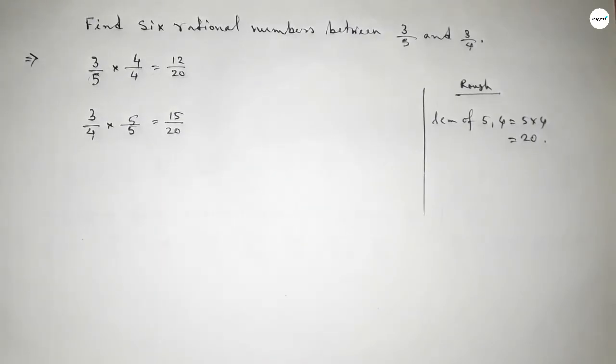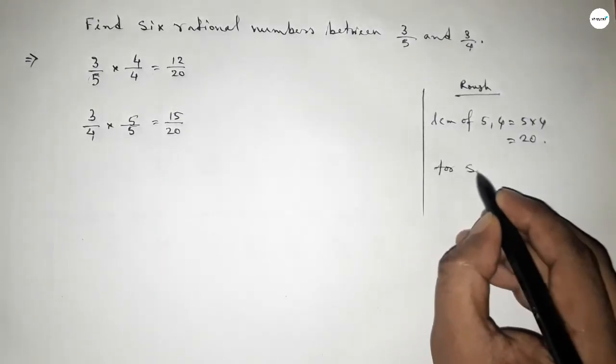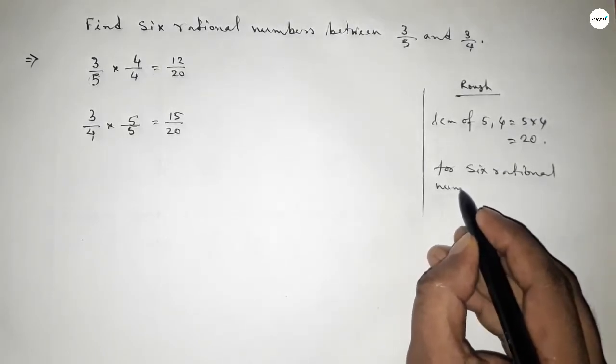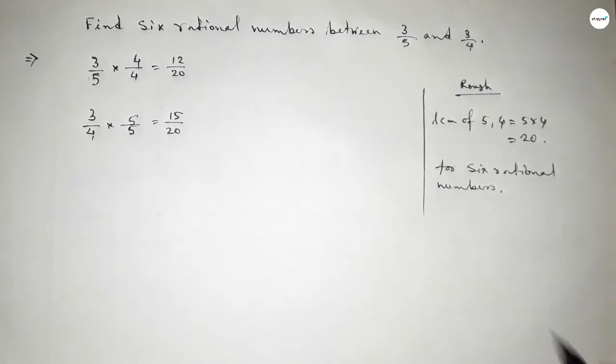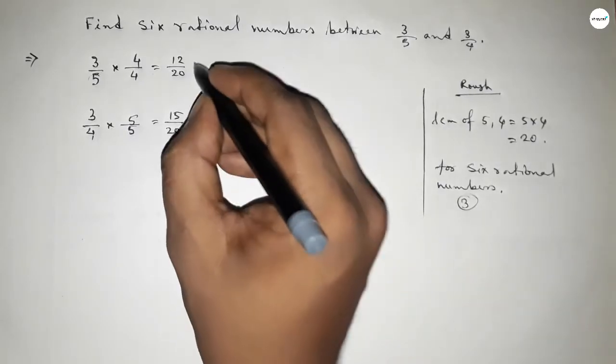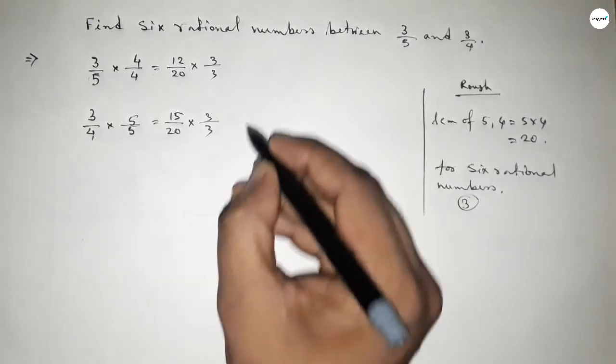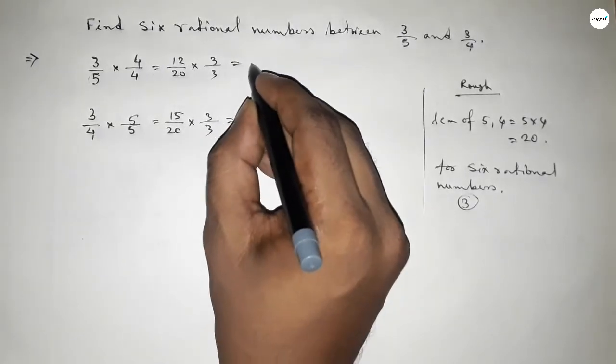Now for this particular sum we have to follow this method. So for finding 6 rational numbers, we have to multiply up and down by 3 with both numbers. By this way, this is 36 over 60 and this is 45 over 60.